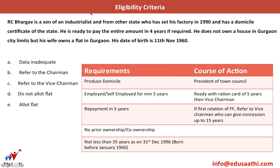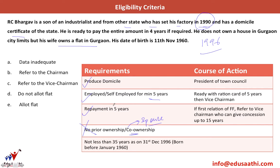R.C. Bhargav is a son of an industrialist from another state who has set his factory in 1990 and has a domicile certificate of the state. Being from a different state does not matter as long as he has the domicile certificate, and since he set his factory in 1990 he is definitely employed for a minimum of five years by 1996. He is ready to pay the entire amount in four years so repayment is good. However, he does not own a house in Gurgaon but his wife owns a flat in Gurgaon — so the no co-ownership condition is not met. Therefore, we will not allot him a flat.